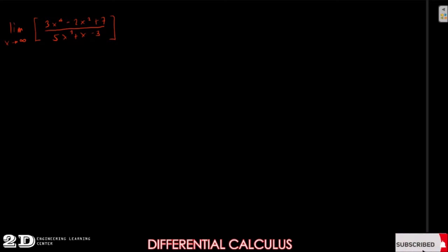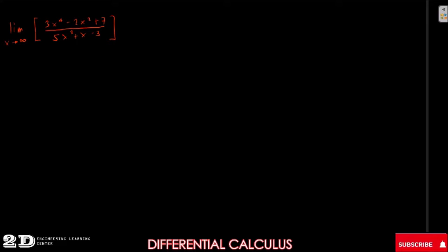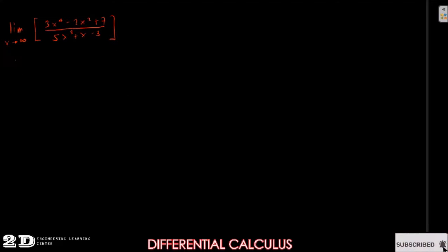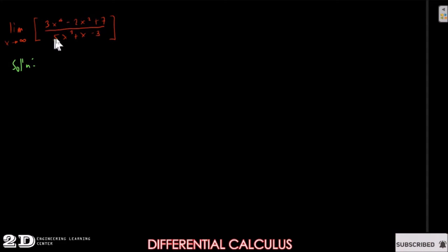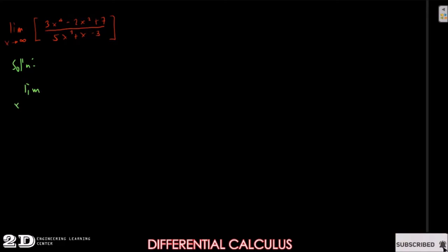Now we will have another example on limits. We have the limit of 3x to the fourth minus 2x squared plus 7, over 5x cubed plus x minus 3, as x approaches infinity. We will first try the algebraic method, but we will not try to factor this one since it would be tedious.